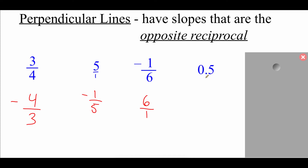Lastly, we've got 0.5. We've been dealing with fractions up to this point, but 0.5 is not a fraction. What we should recognize is that 0.5 is the same as one-half. So if we do the opposite reciprocal of that — flipping the fraction over we'd get two over one — but then doing the opposite, we started with something positive, so we need to end with something negative.